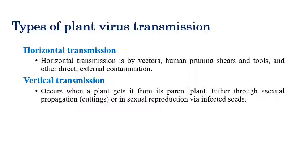Vectors come under horizontal transmission. A vector is any living or biological agent which acts in transmitting a plant viral disease. For example, if an insect transmits a viral disease from one area to another, the insect is considered a vector because it is a biological agent transmitting the plant viral disease from one area to another.